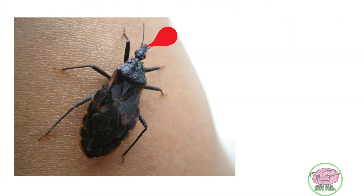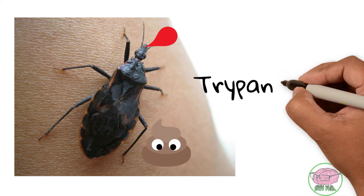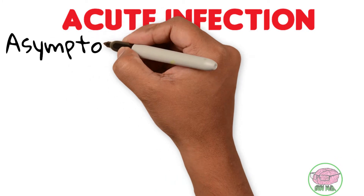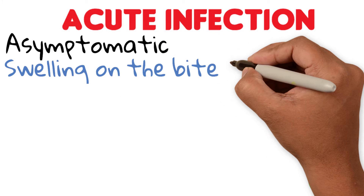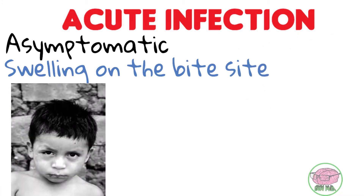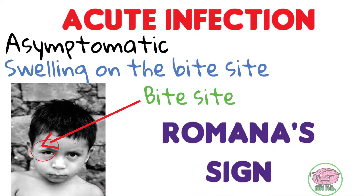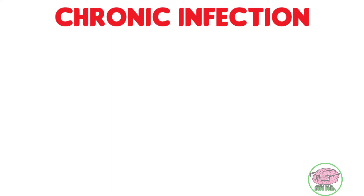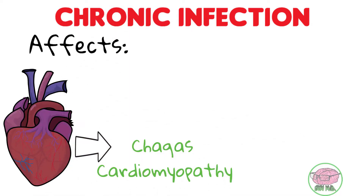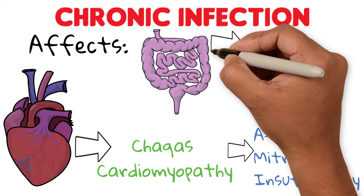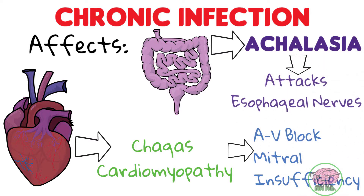These insects feed on human blood. When the insect is feeding, it defecates on human skin and the Trypanosoma, which is found in the insect feces, can enter the human body through the wound. This leads to an acute infection that can have no symptoms at all, or can sometimes present as inflammation at the site of the insect bite. What the patient thought to be an allergic reaction of his eyelid is actually known as Romaña's sign — a swollen eyelid due to inoculation of Trypanosoma cruzi. After the acute infection, the parasite can remain dormant in the human body for many years and then cause the chronic disease, which usually affects the heart, known as Chagasic cardiomyopathy, as well as the gastrointestinal system. This is why Juan has a second degree AV block, mitral valve insufficiency, and achalasia. The Trypanosoma loves to attack the nerves of the esophagus, leading to achalasia.